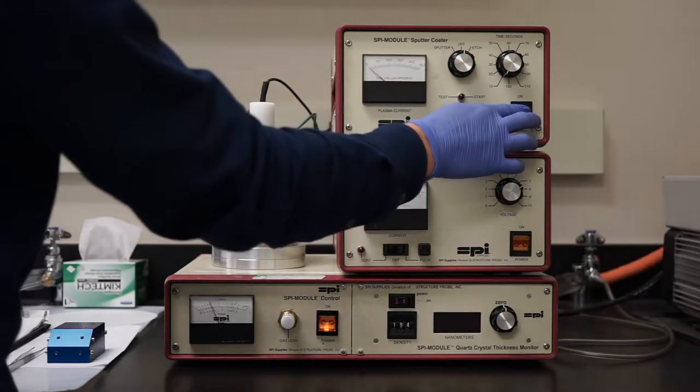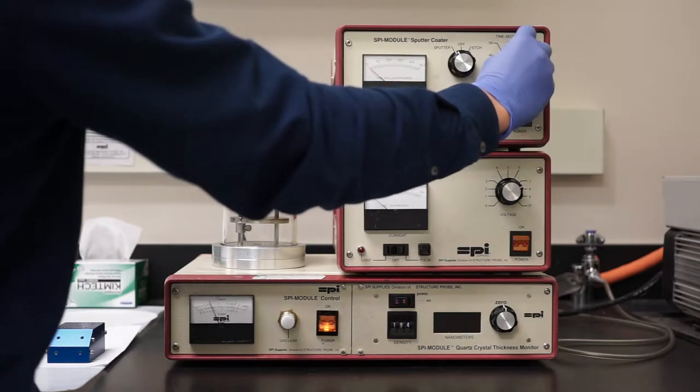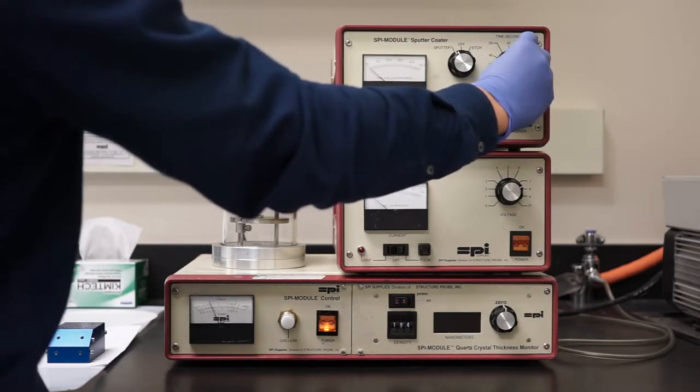Turn on the power for the sputtering unit. Turn the knob from off to sputter and select a sputter time. Do not turn the knob past 120 seconds because this will damage the controls.